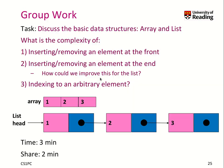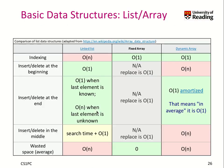Why does it take so long? Well, if you want to find element 3, you have to start from the list head and traverse three elements. So you have to go N elements deep. In an array, you can directly index an element — that's why it's O of 1.